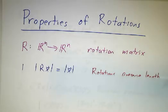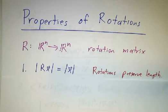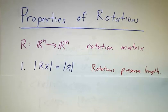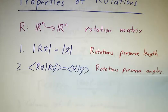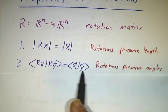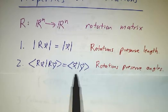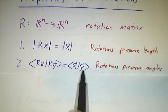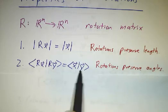The first thing you notice about rotations is that they preserve length. You can turn something around, turn it upside down, twist it however you like, and it stays the same length. Rotations also preserve the angle between any two vectors, and therefore preserve the inner product, because the inner product is the length of one times the length of the other times the cosine of the angle between them.